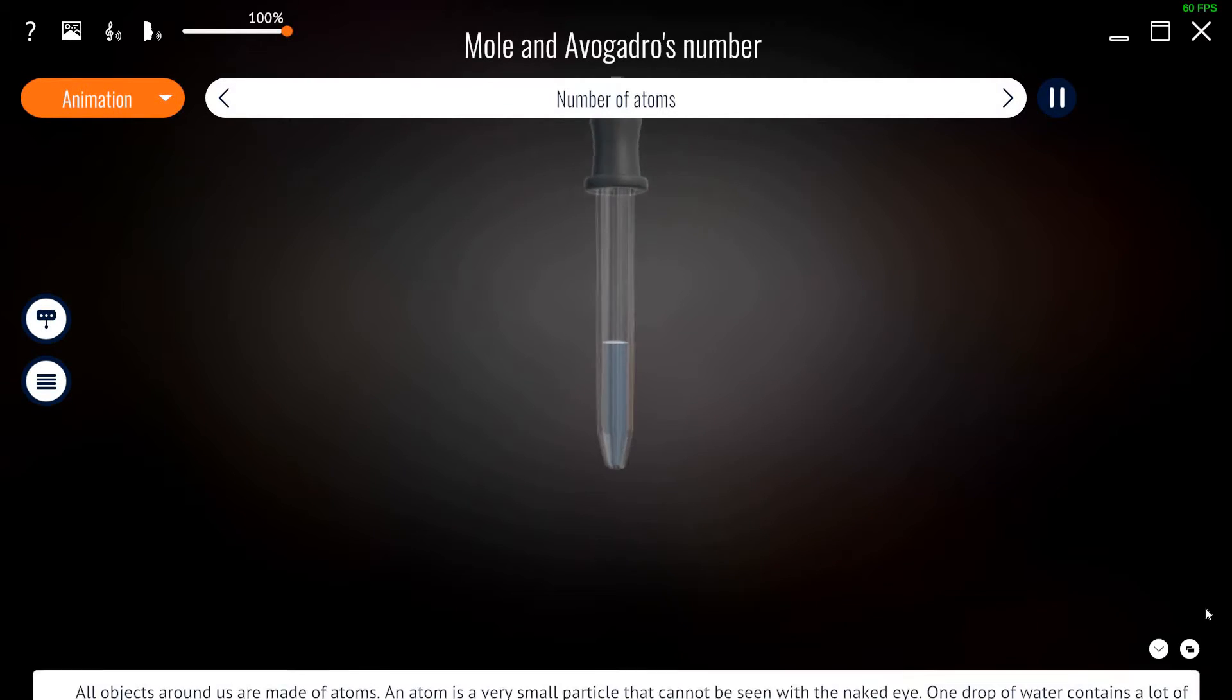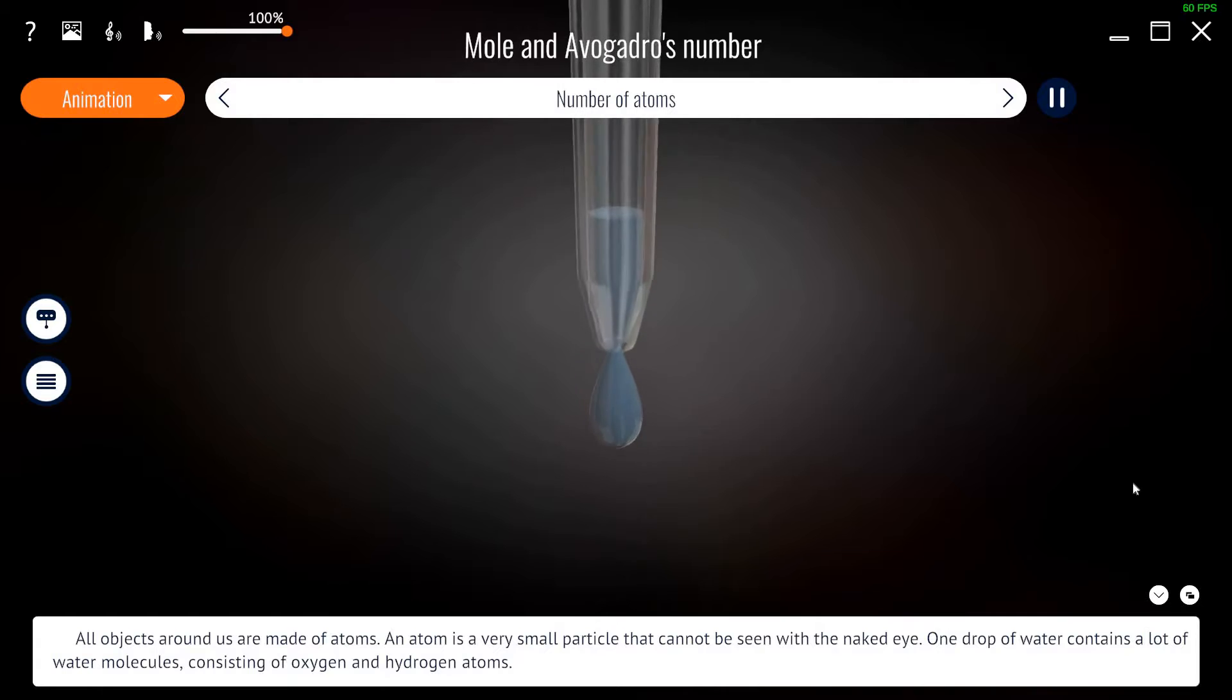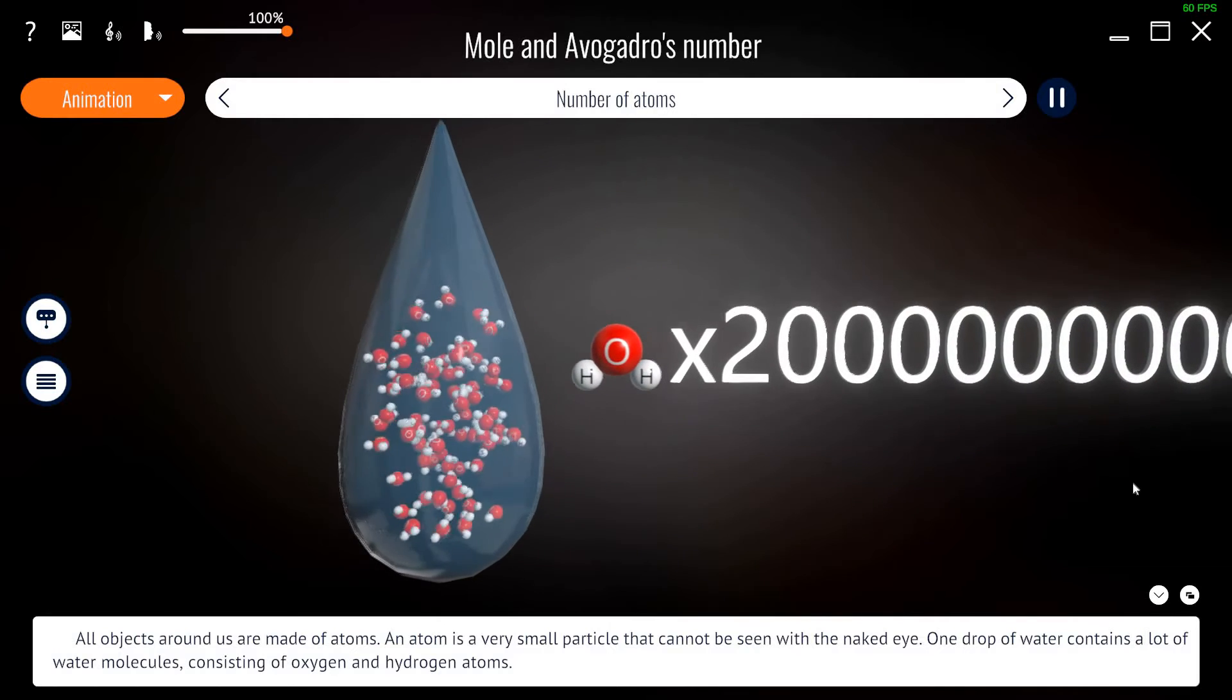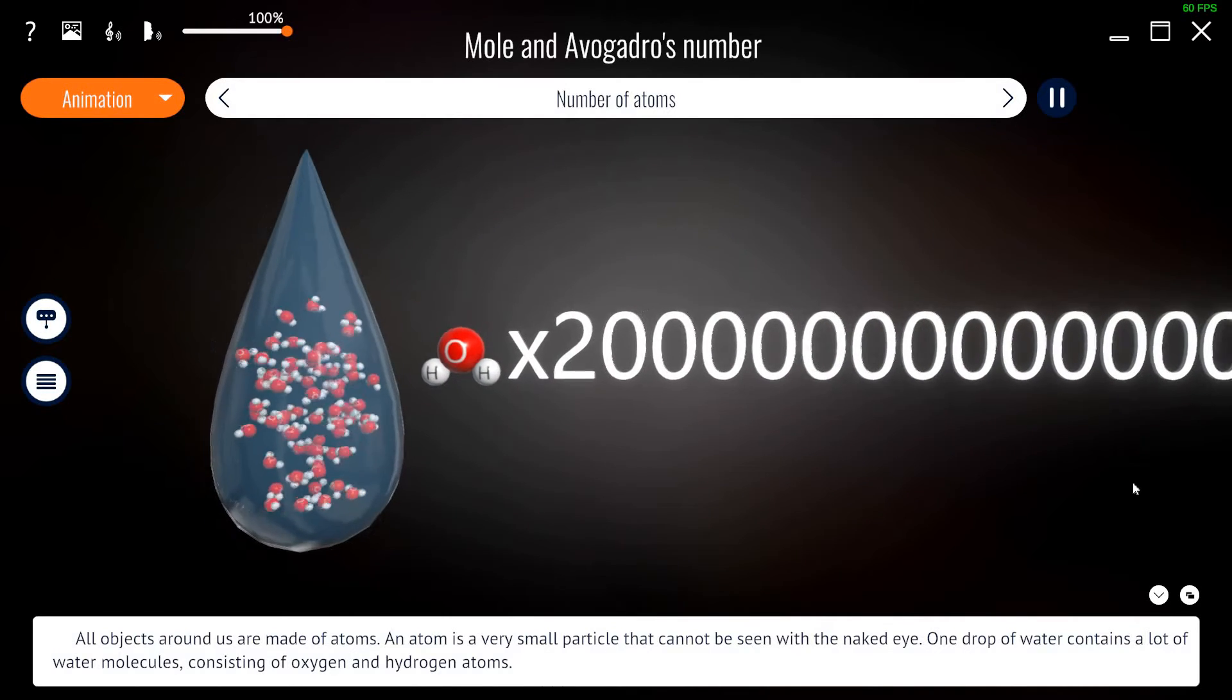All objects around us are made of atoms. An atom is a very small particle that cannot be seen with the naked eye. One drop of water contains a lot of water molecules, consisting of oxygen and hydrogen atoms.